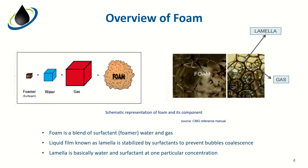Before we go into the practical sections and illustrating how to set up the model in CMG STARS, it is important that we have an overview of foam. Foam is typically a blend of surfactant, water, and gas. If you look at the diagram on the right hand side, the liquid part of the foam is called the lamella, which is stabilized by surfactants to prevent bubble coalescence. The lamella itself is basically water and surfactant at a particular concentration.